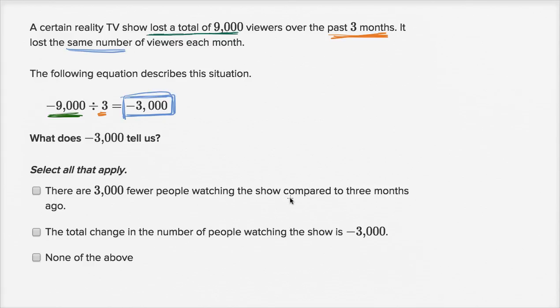There are 3,000 fewer people watching the show compared to three months ago. No, they lost 3,000 every month. That's what this is telling us. Every month for three months. There's the same number each month. They lost 3,000 every month for three months for a total of 9,000, so this isn't right. The total change in the number of people watching the show is negative 3,000. Over a month that would be true, but the total change was 9,000. So, or negative 9,000, I guess I could say. They lost 9,000, and so I would say, none of the above. What the negative 3,000 tells us, if there was a choice that said, each month they lost 3,000 viewers, that's the choice that I would pick. So, I would say, none of the above.